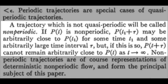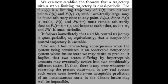So with these three definitions — the limit trajectory, the stable trajectory, and the periodic trajectory — we can build a theorem that any trajectory with a stable limiting trajectory is quasi-periodic.